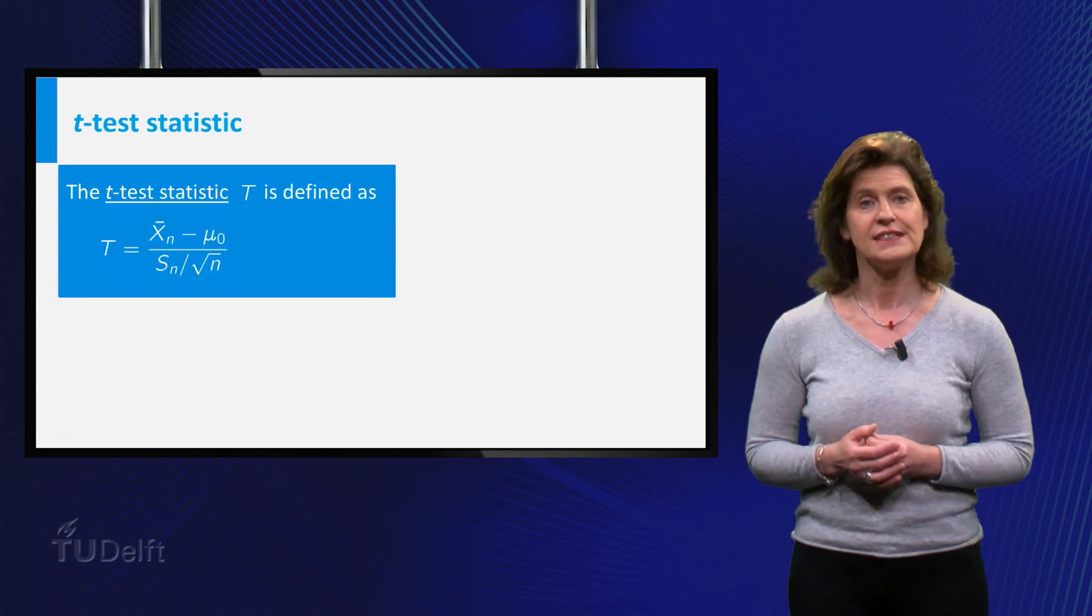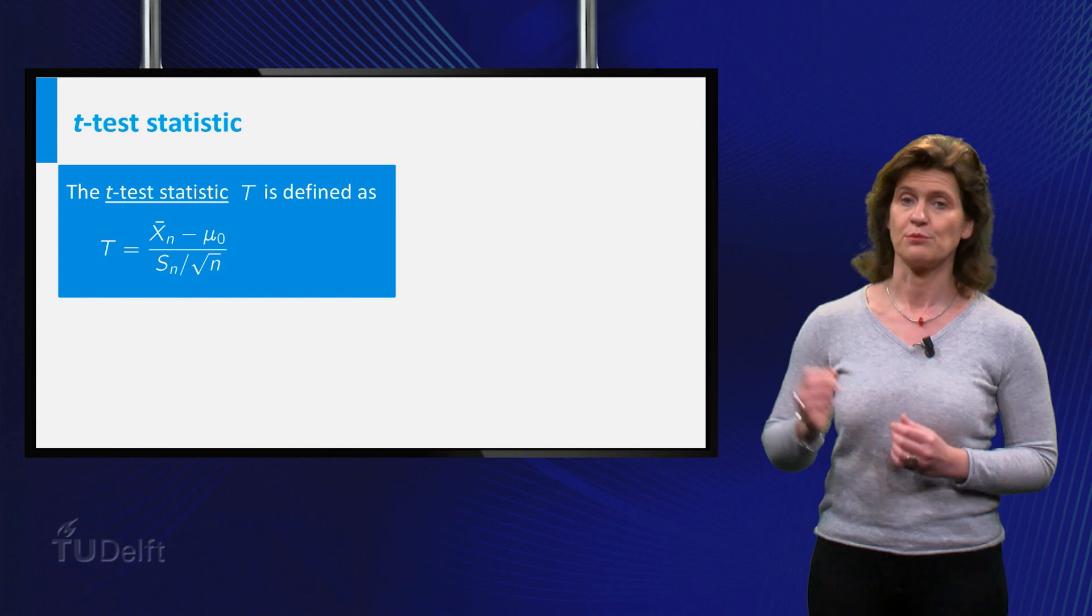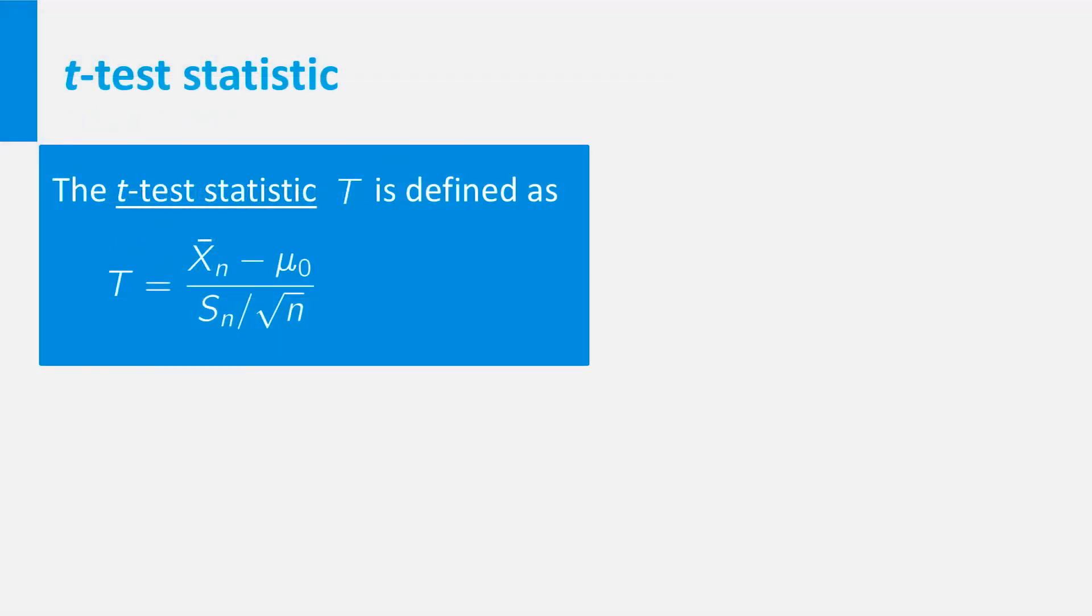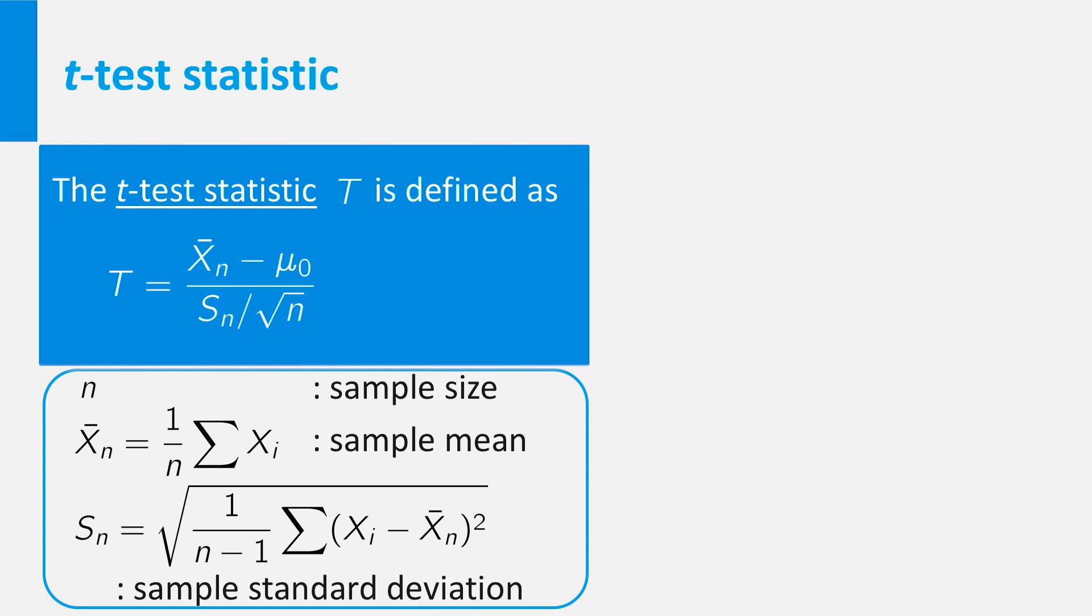Here is the definition of the t-test statistic for such a testing problem. Let's have a closer look at this definition. First you see it depends on the sample size n, the sample mean xn, and on the sample standard deviation that we called Sn, quantities that you can always compute directly from the data.